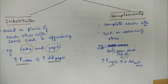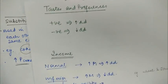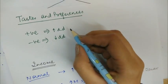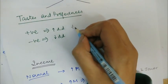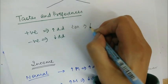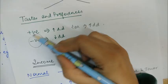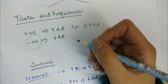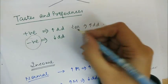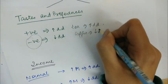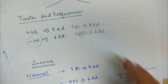Tastes and preferences of the consumer also affect demand. If the consumer has developed a positive taste for tea, the demand for tea will increase. And if the person has developed a negative preference for coffee, the demand for coffee will decrease.